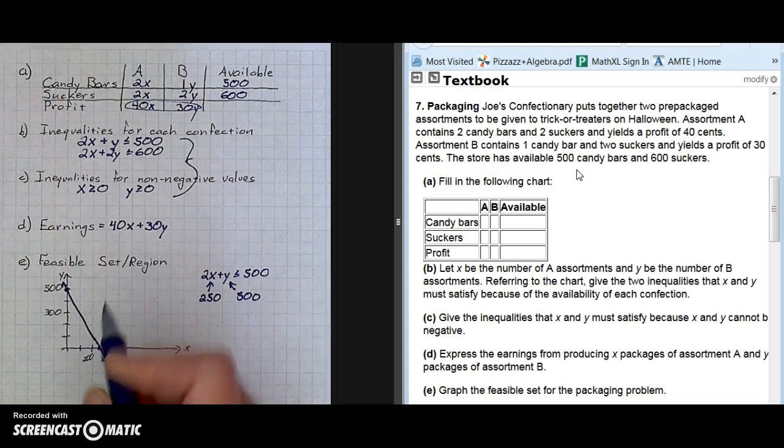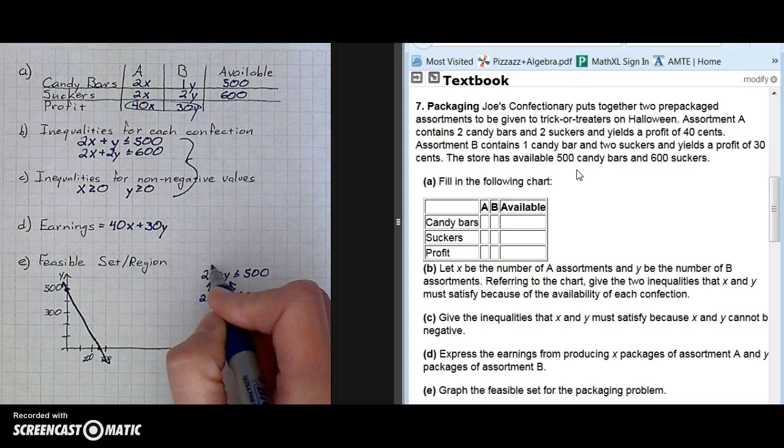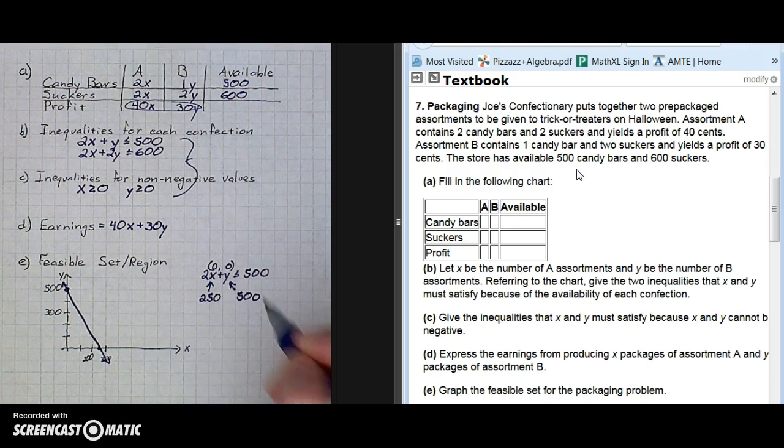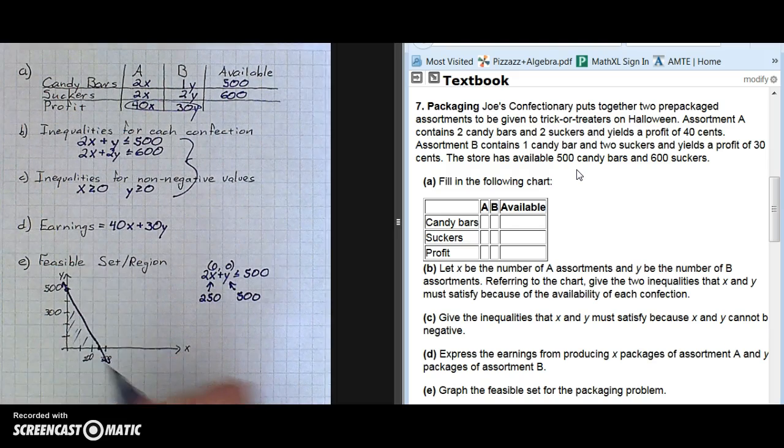You decide which side of the line to shade by putting in 00, the ordered pair, 00 for X and Y. We see it gives us a true statement, so we know we're shading to the left of the line.